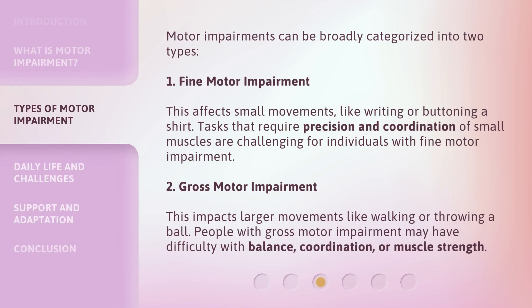Motor impairments can be broadly categorized into two types. First, Fine Motor Impairment: this affects small movements, like writing or buttoning a shirt. Tasks that require precision and coordination of small muscles are challenging for individuals with fine motor impairment.